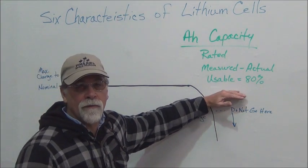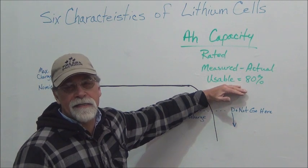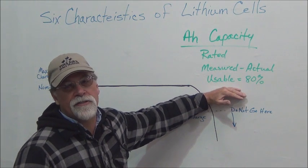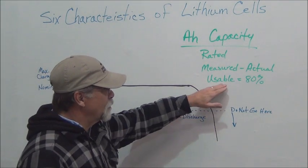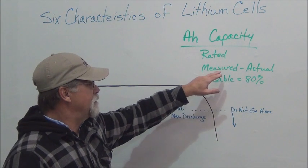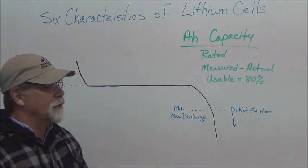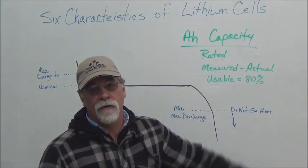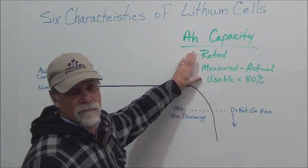And then there's the usable, and this is the one that's the most important, because that's what equates to range. And so your actual usable amp hours is going to be this. It's 80% of the actual measured value. But we tend to ignore that, and we rate it based on the rated.